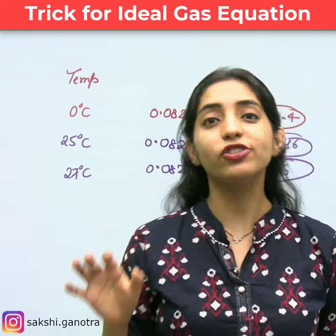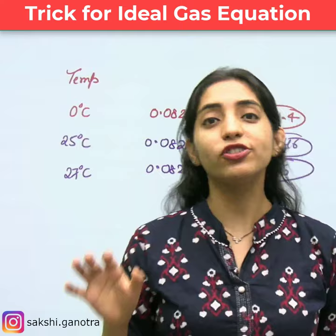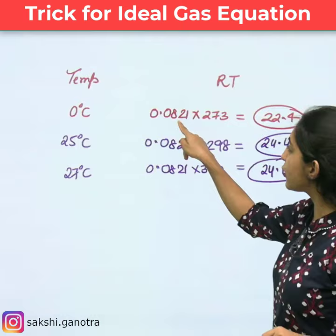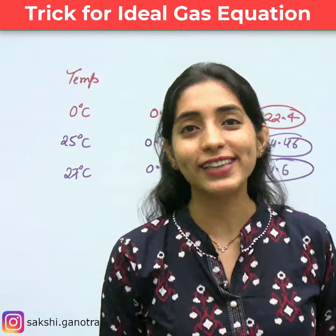Now, the calculation is very tough. Like, if I say that you calculate 0 degree C, then you will do 0.0821 multiplied by 273. In your own calculation, it goes down. So, I will give you a very good idea.